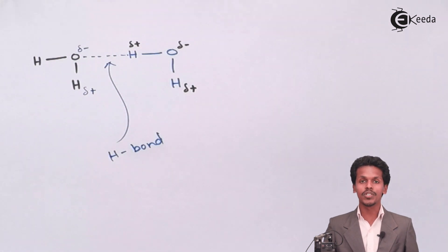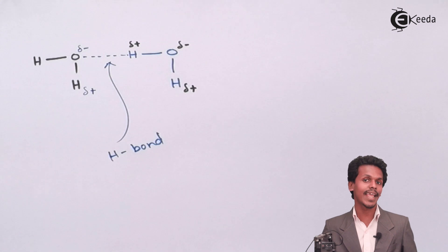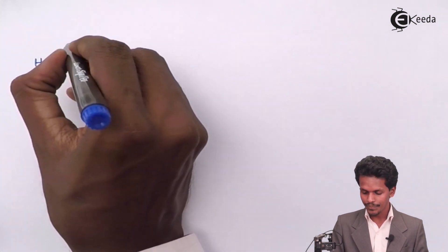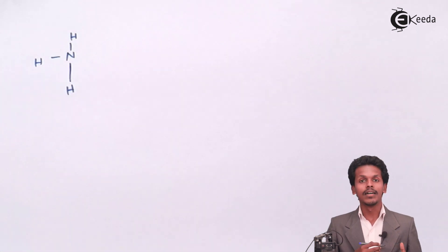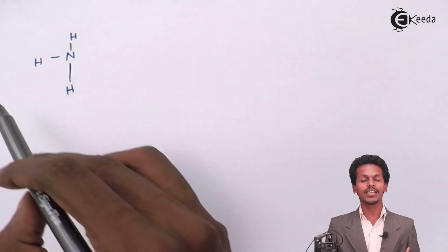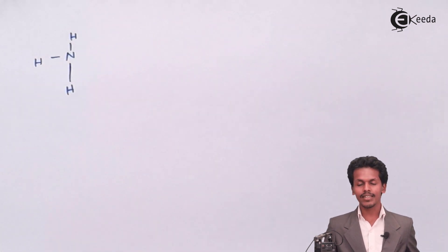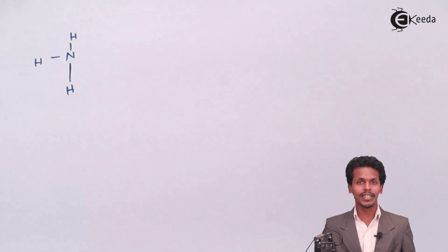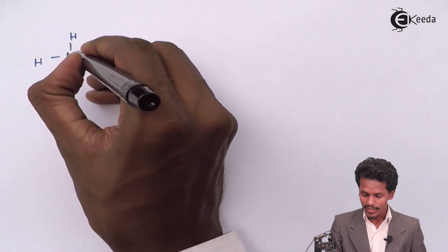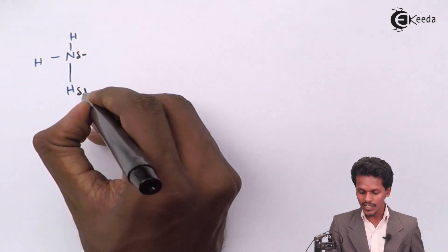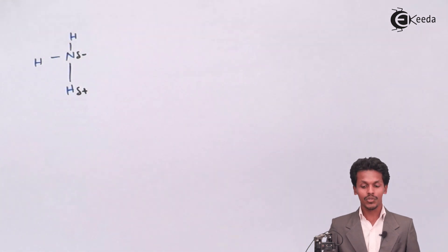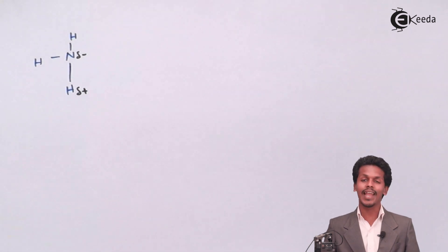We can also examine this for NH₃ molecules. In an ammonia molecule, the nitrogen is surrounded by hydrogen atoms. Nitrogen is electronegative because it is the first atom belonging to the nitrogen group and is highly electronegative. Therefore, nitrogen is highly electronegative compared to hydrogen, which is basically positive. Because they are bonded with each other, one acquires a partial negative charge while the other acquires a partial positive charge, making NH₃ a polar molecule.